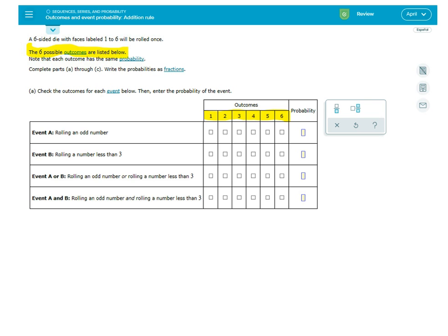When you roll that die it'll either land on a one, a two, a three, a four, a five, or a six.